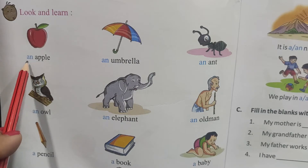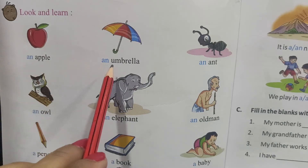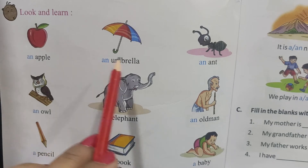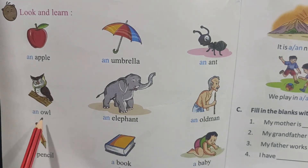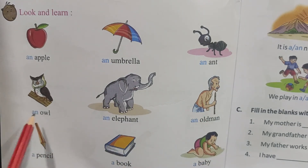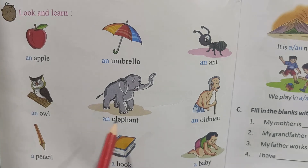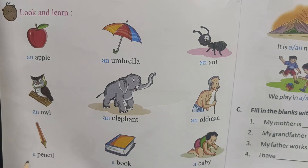A — to hum kya lagayenge? AN. Umbrella — U ke aage kya aata hai? AN. Aunt — AN. Owl — AN. Elephant — AN. Old man — O, AN.